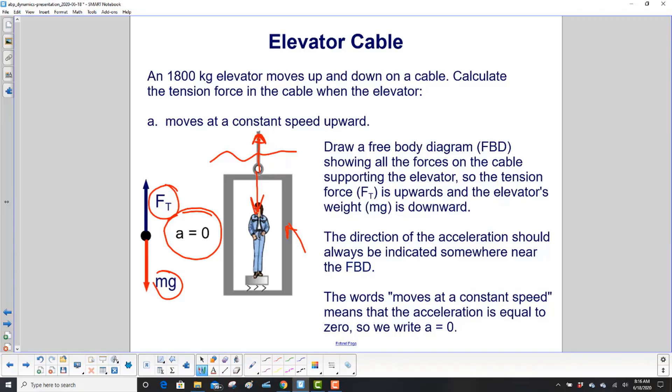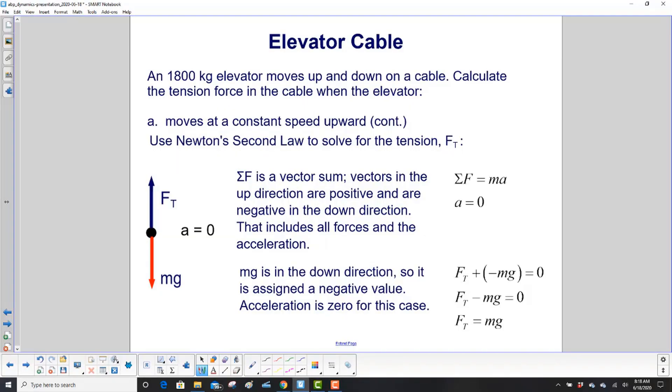The next step after we have our free body diagram is to write Newton's second law. Key thing here: the sum of the forces is a vector sum. That means we're going to say vectors in the up direction are positive and negative in the down direction. This will apply to all forces and the acceleration. By vector sum, that means you add the numbers - for example, if you have one going up which is plus five and one going down is minus three, you add those two, so it would be five minus three.